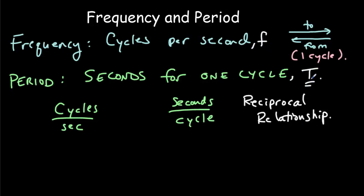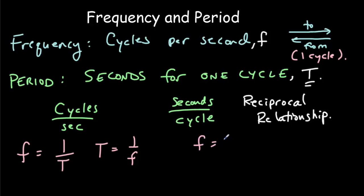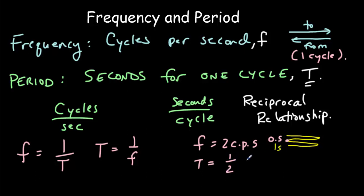We'd use a small f for frequency and a capital T for period. The reason we use a capital T is because this is an amount of time. We have a reciprocal relationship between period and frequency: frequency equals one over the period, and the period equals one over the frequency. For instance, if your frequency is two cycles per second, your period would be 0.5 seconds — one over two — and here you see the reciprocal relationship.